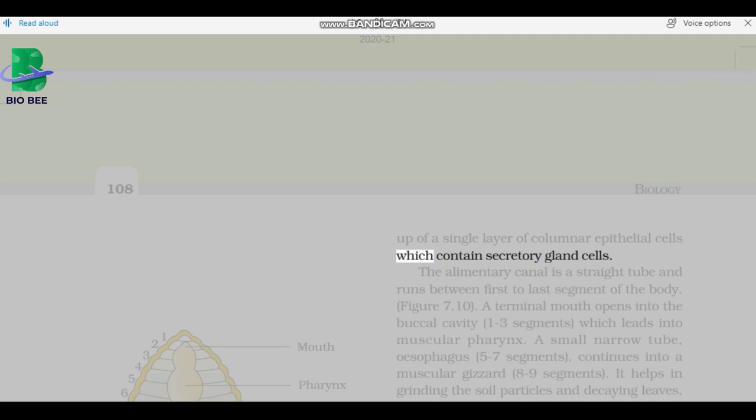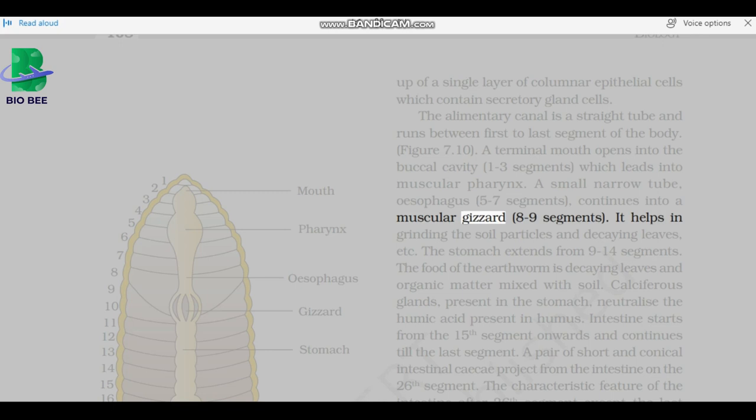The alimentary canal is a straight tube and runs between first to last segment of the body. A terminal mouth opens into the buccal cavity, 1 to 3 segments, which leads into muscular pharynx. A small narrow tube, esophagus, 5 to 7 segments, continues into a muscular gizzard, 8 to 9 segments. It helps in grinding the soil particles and decaying leaves.